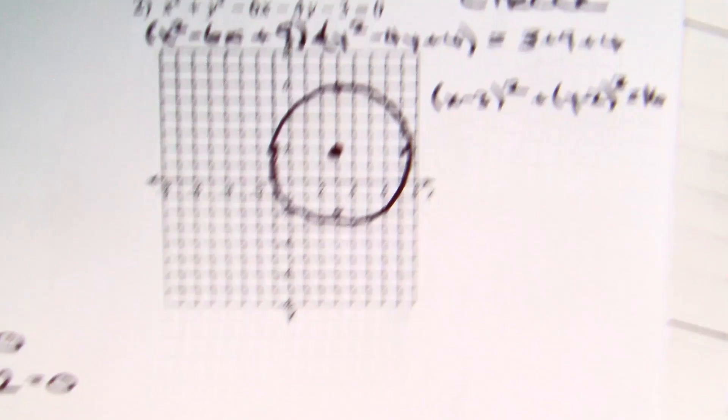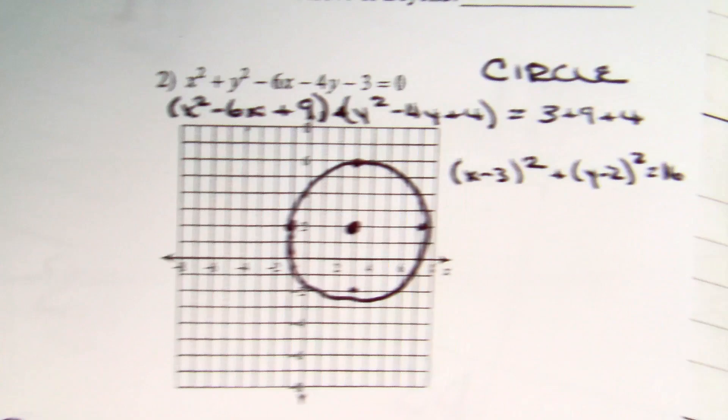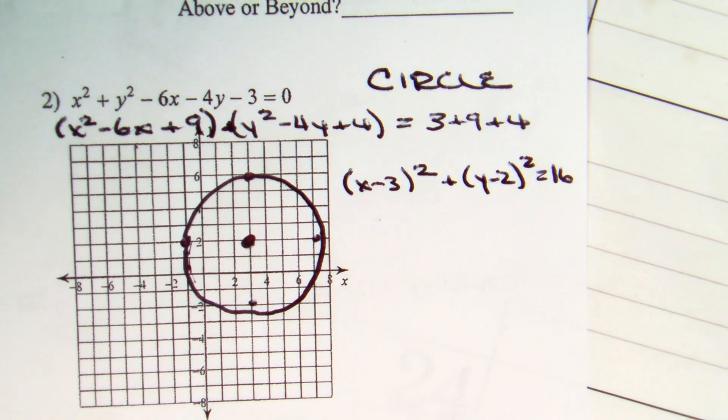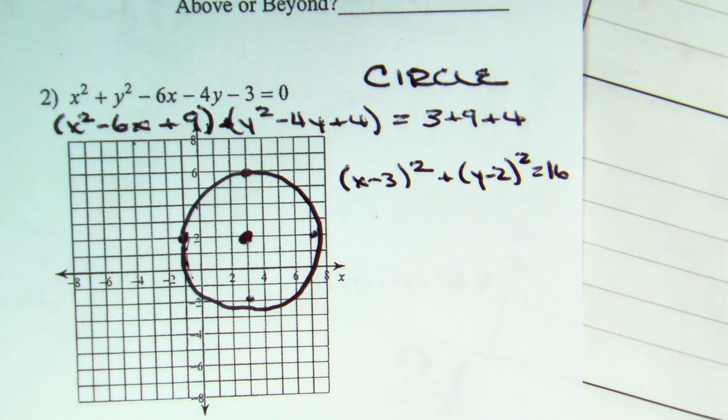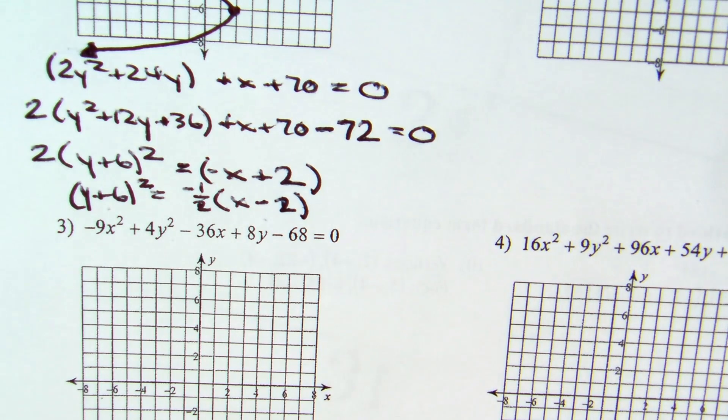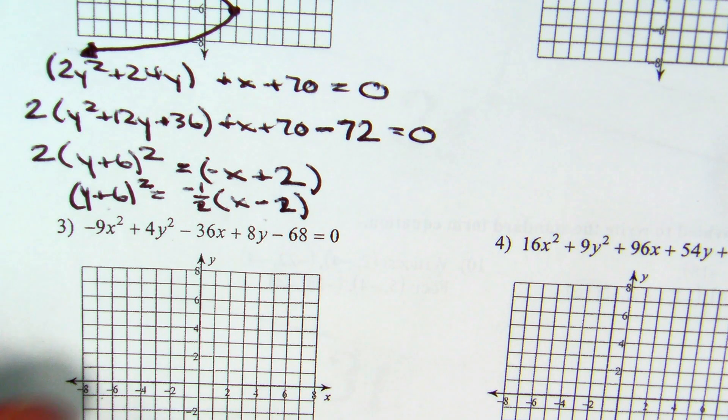Alright. Number 3. Everybody's got that? Need to... Go once. Go twice. Sold the little lady with the purple hat. Number 3. One's positive and one's negative. That, my friends, is a hyperbola. Okay.